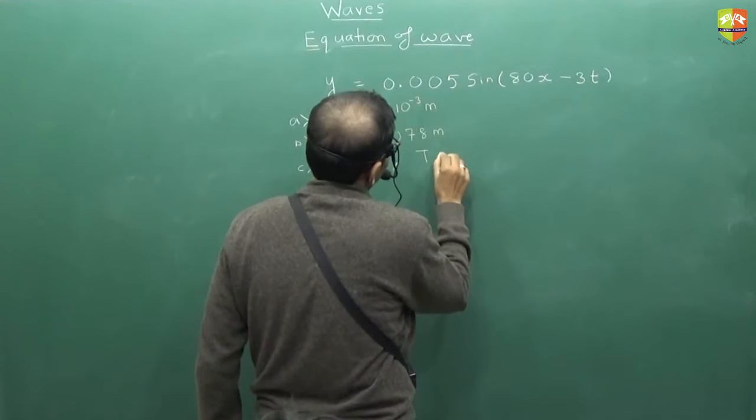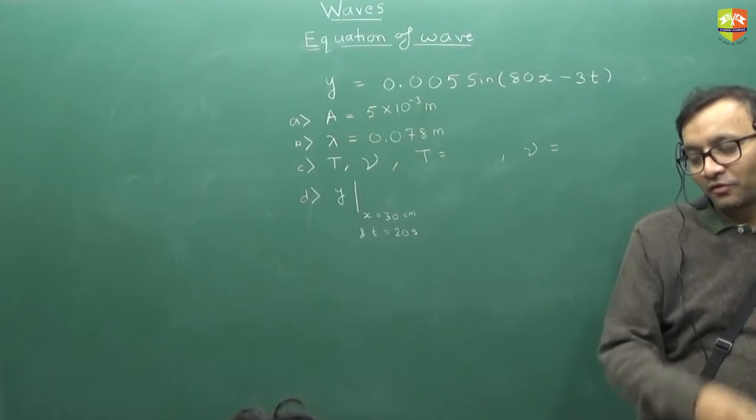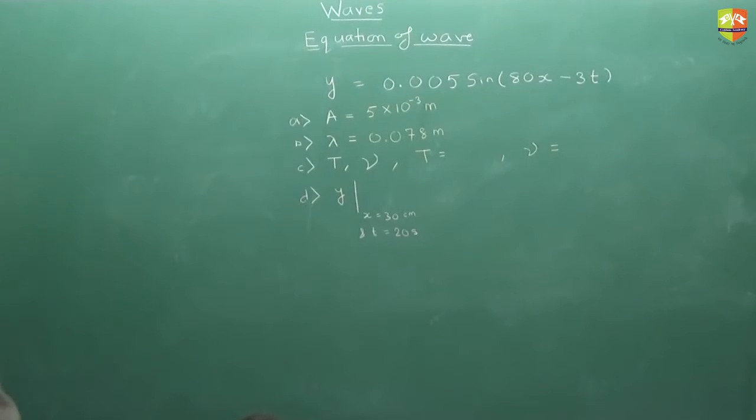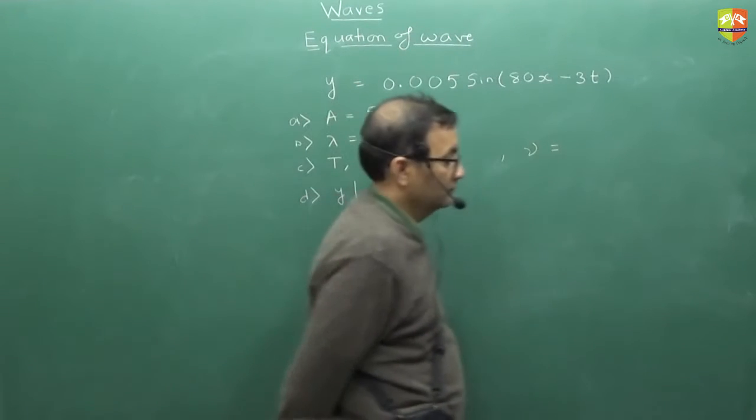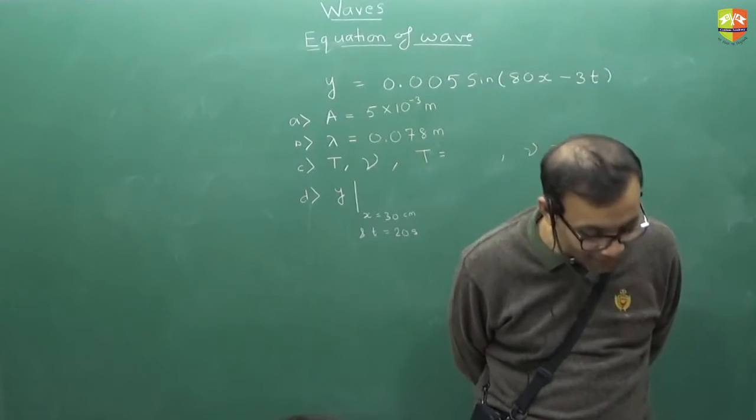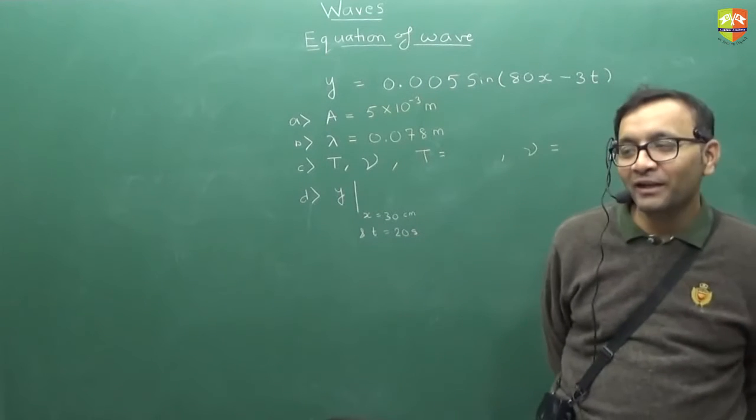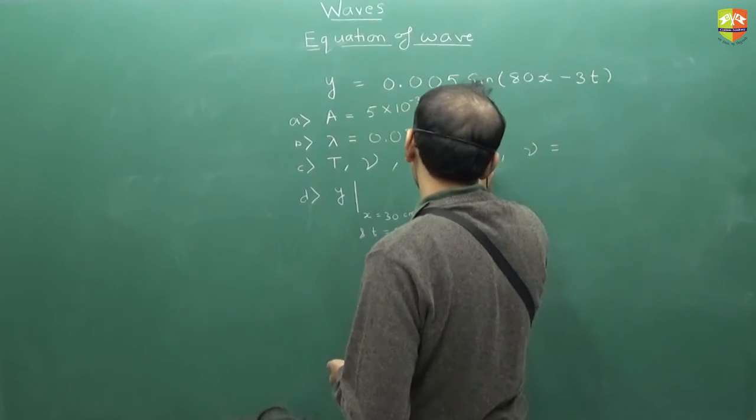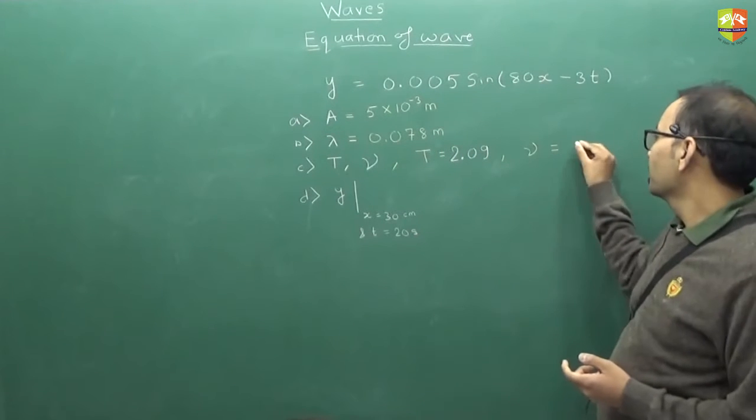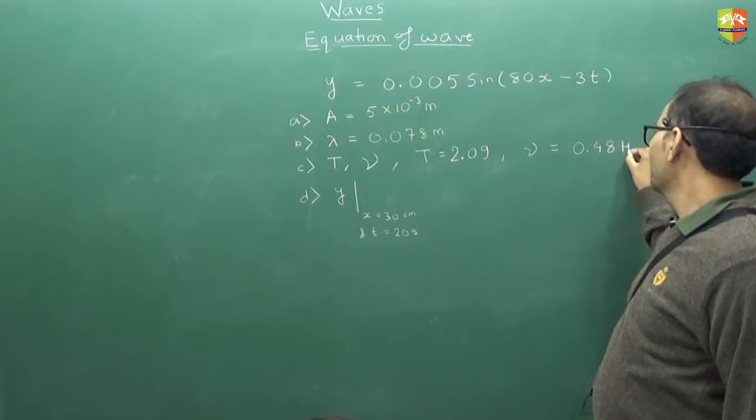Find out the time period and then tell me the frequency. So time period is 2 pi by omega, so if you add pi, it is 3.14... 2.09 is the time period. Frequency inverse of this. 0.48 hertz. The unit is hertz.